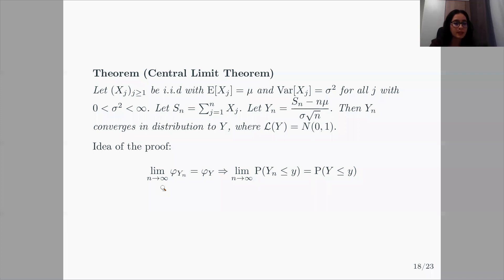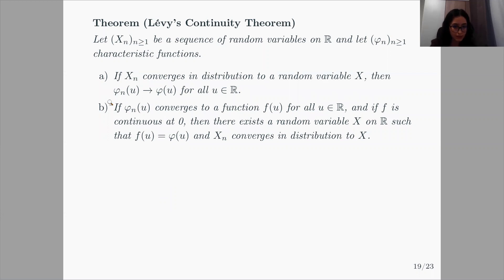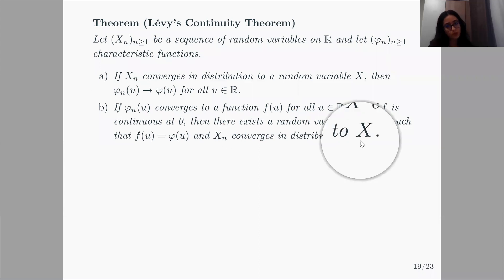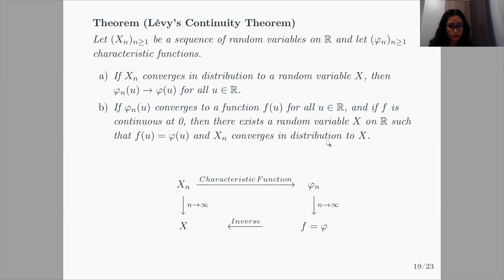This idea is proven by Lévy's continuity theorem. Looking at the second part only: if we have a sequence of random variables with characteristic functions phi_n, and these characteristic functions converge to a function f of u, and if this f is continuous at zero, then there exists a random variable with characteristic function f such that x_n's converge in distribution to x. If the characteristic functions of x_n's converge to a function that is continuous at zero, then there exists a random variable x such that x_n's converge to x in distribution.